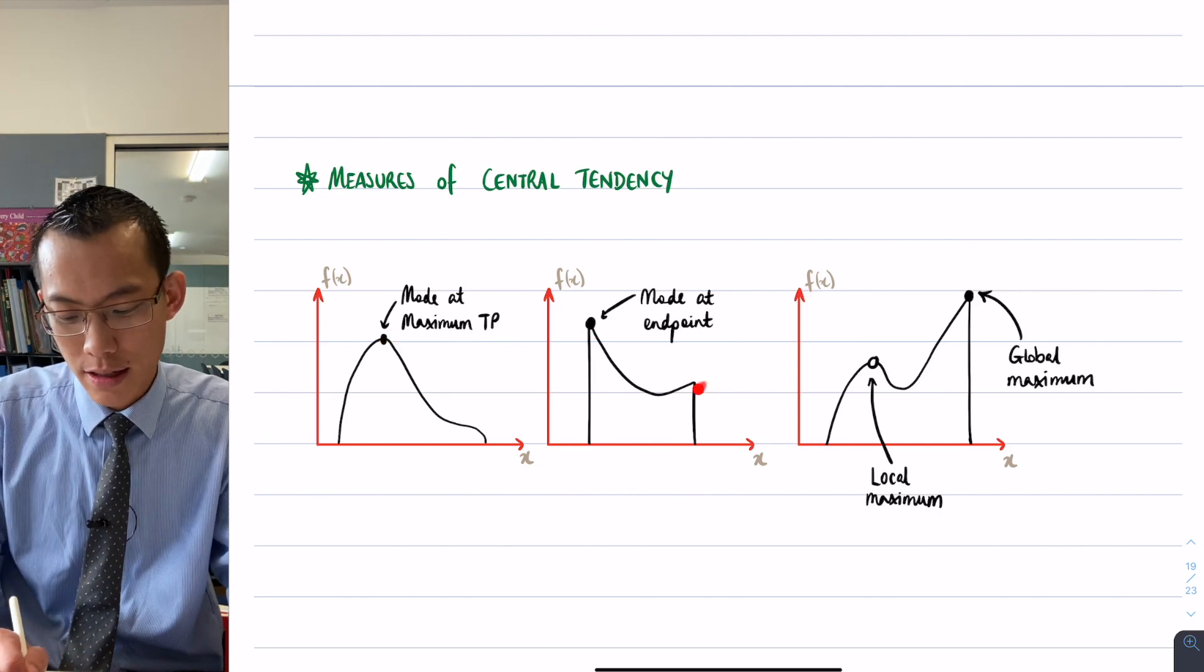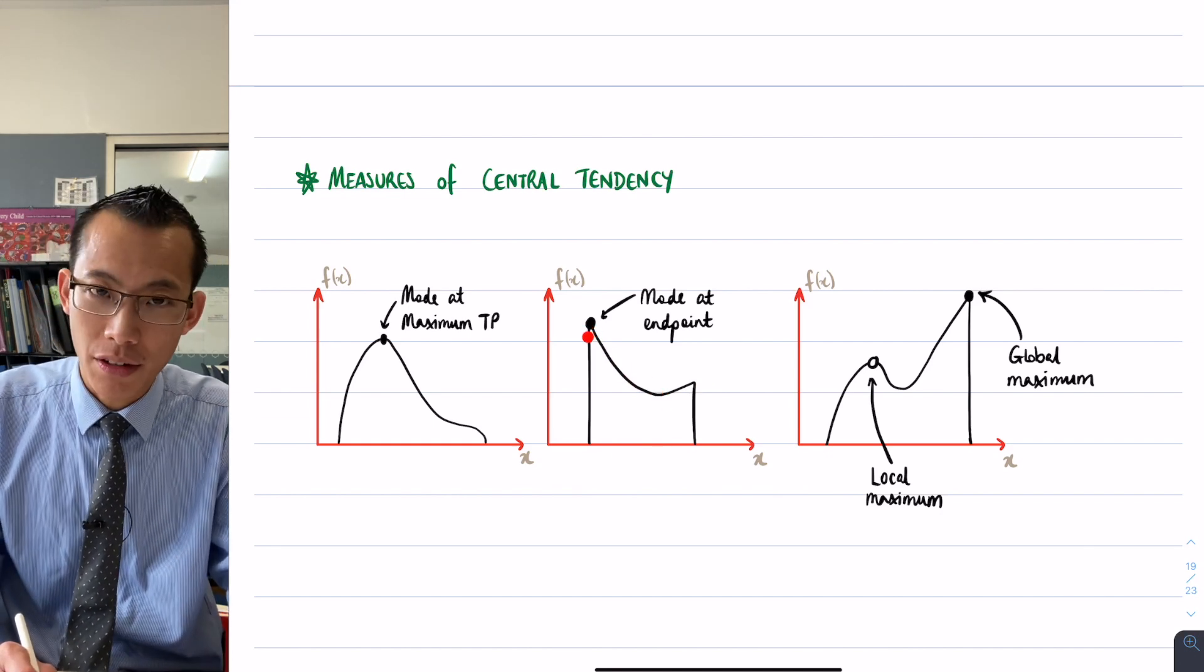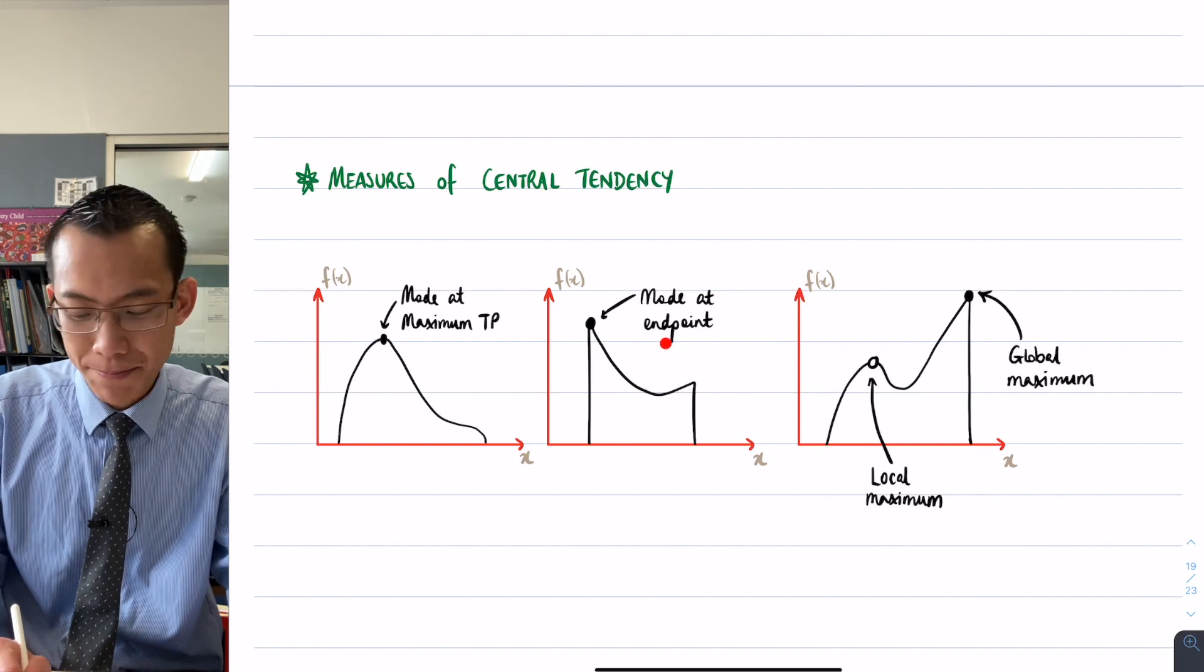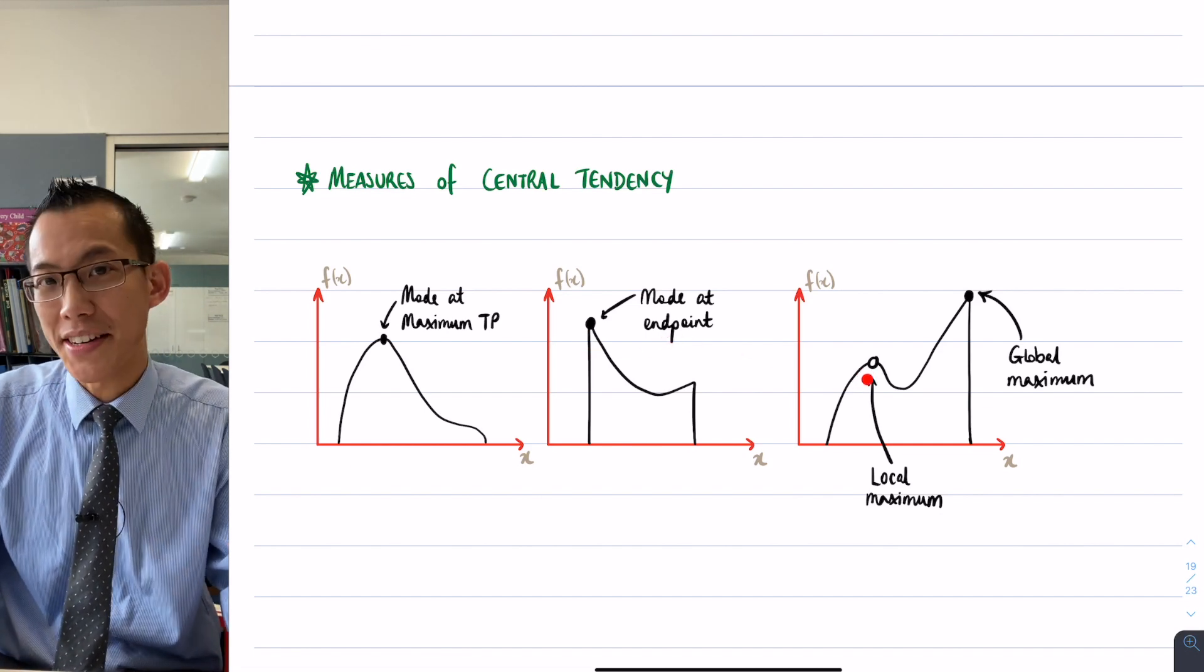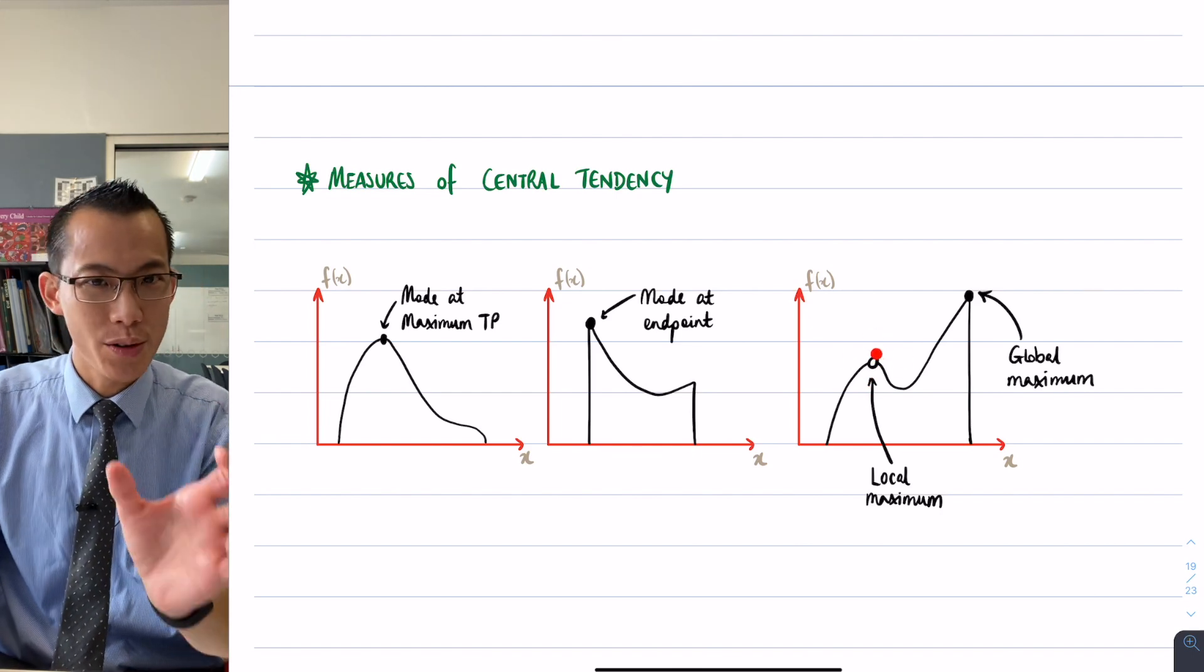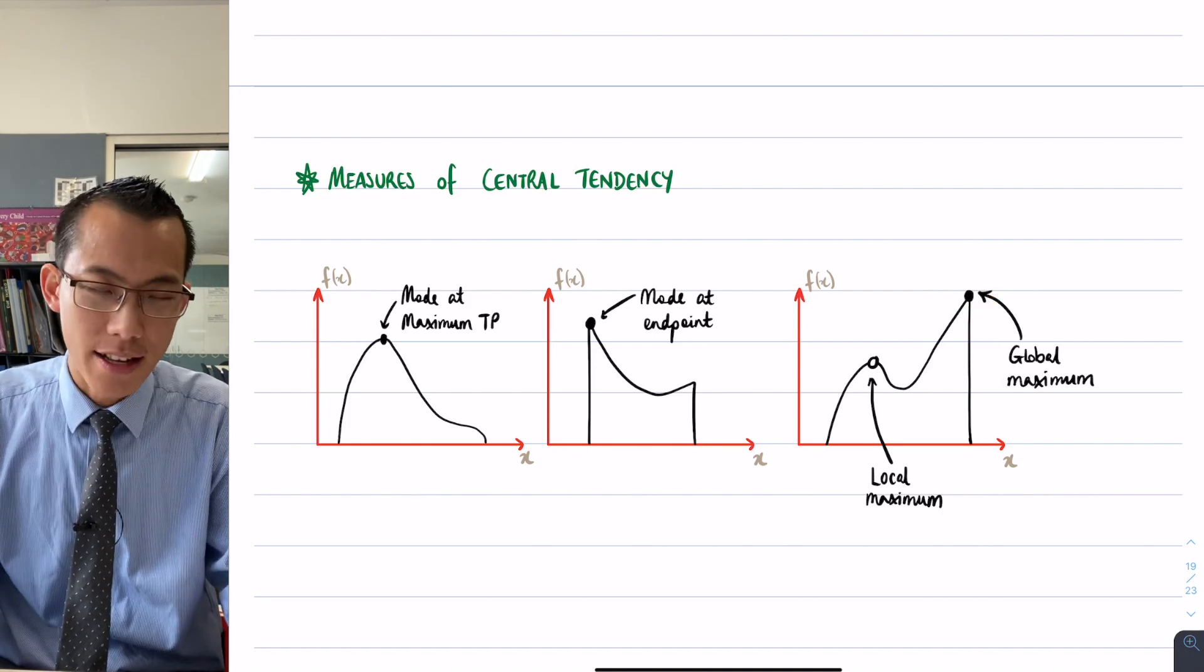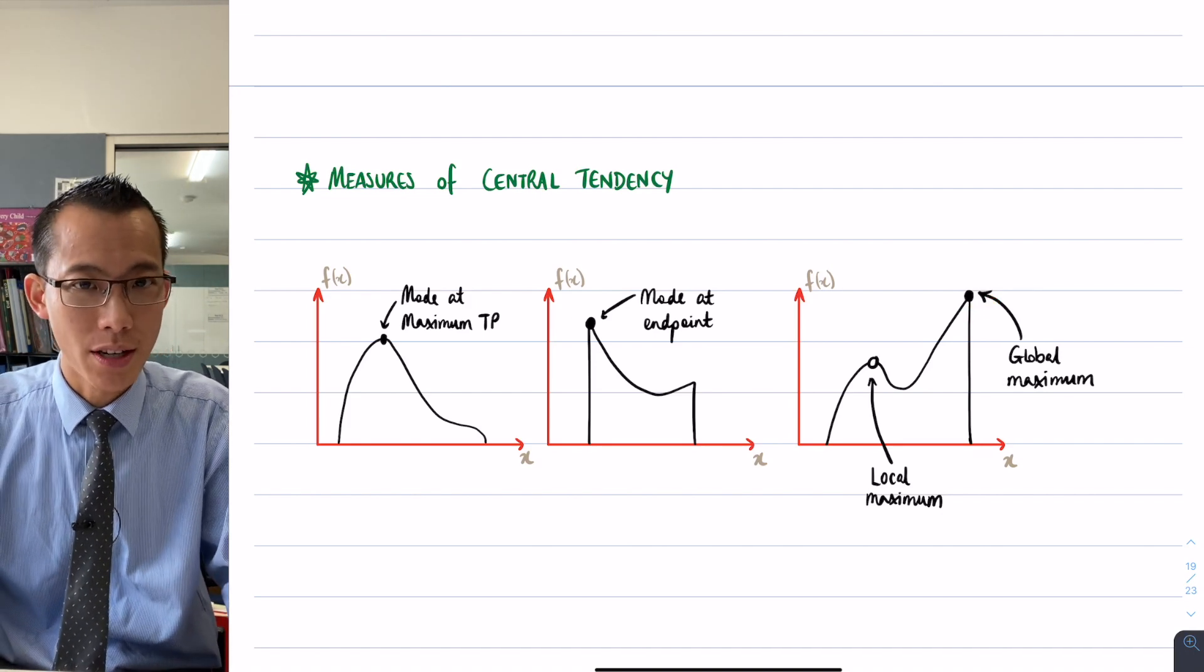You've got a function like this where you've got a stationary point down here but it's a minimum, so you're going to get the highest probability, the mode, existing at an endpoint. And even if you do find a stationary point that's a maximum, if it's a local maximum relative to that little area, then the global maximum, which is the true highest probability, is going to be somewhere else, on an endpoint also.